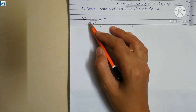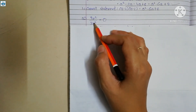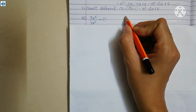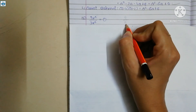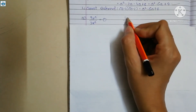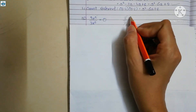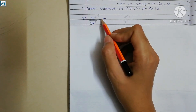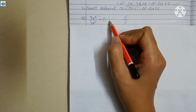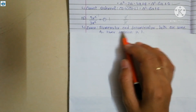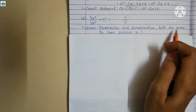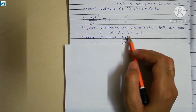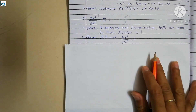Statement 16 is 3x squared upon 3x squared equals 0. Since numerator and denominator are the same, just like 9 upon 9 equals 1, this fraction equals 1, not 0. The error is: numerator and denominator are both the same, so that division is 1. The correct statement is: 3x squared upon 3x squared equals 1.